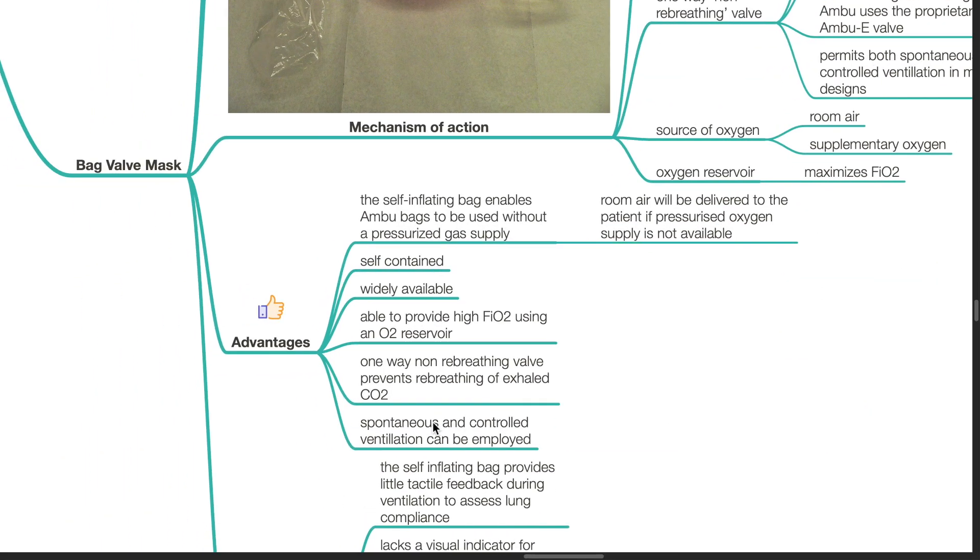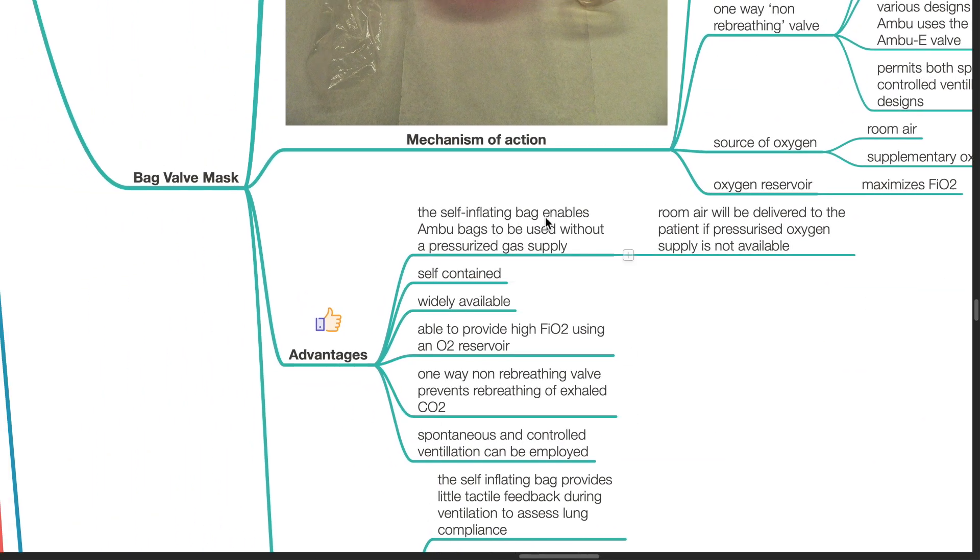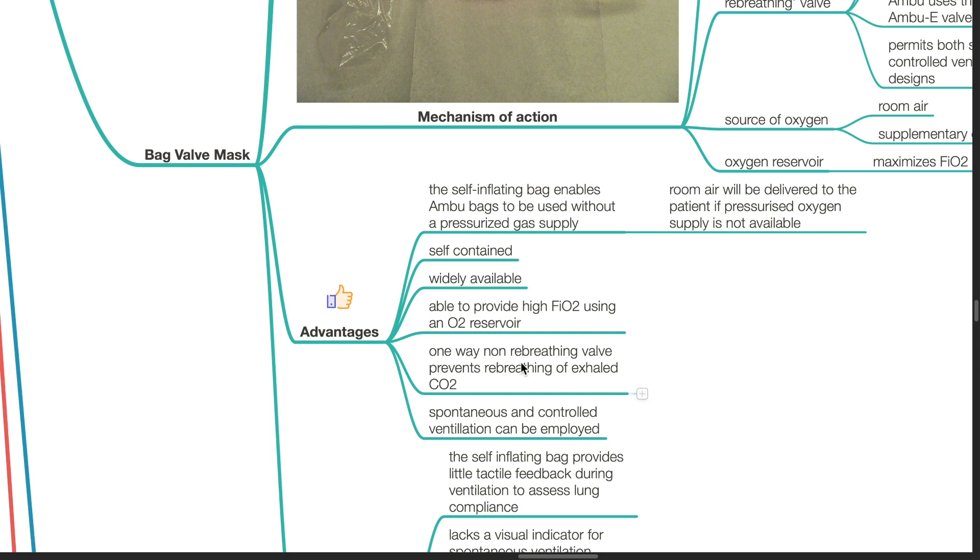Advantages. The self-inflating bag enables Ambu bags to be used without a pressurized gas supply. Room air will be delivered to the patient if pressurized oxygen supply is not available. It is self-contained, widely available, able to provide high FiO2 using an oxygen reservoir. The one-way non-re-breathing valve prevents re-breathing of exhaled CO2. Spontaneous and controlled ventilation can be employed.